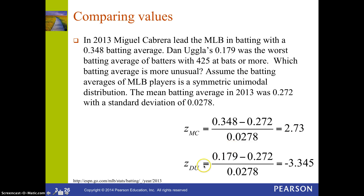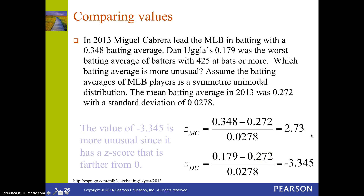For Dan Uggla, I do the same thing: .179 minus the mean batting average, divided by the standard deviation, comes out to negative 3.345. It's negative because his average is below the mean. His average is very unusual — it's not even within three standard deviations of the mean, which is where almost all batting averages fall. Since Dan's z-score is further from 0, his batting average is more unusual than Cabrera's.